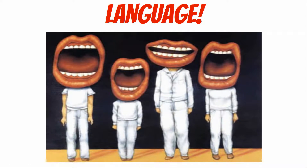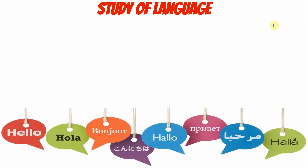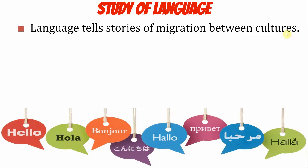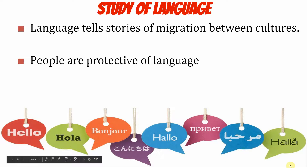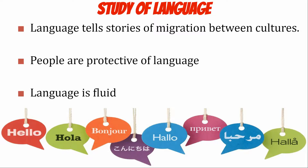Today we're looking at language — why there are so many languages, how we get them, and how they diffuse. Languages tell stories about cultures, their interactions, and how they migrate. If a language has French, Spanish, or English words mixed in, those languages share some history or migration. Most people are very protective of their language because it's seen as a massive part of culture — it's part of who you are.